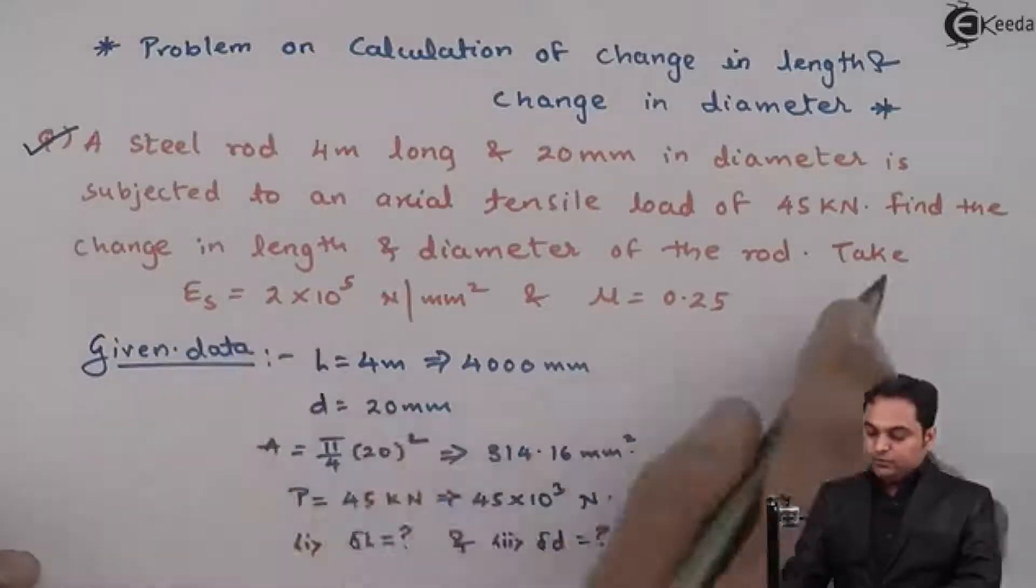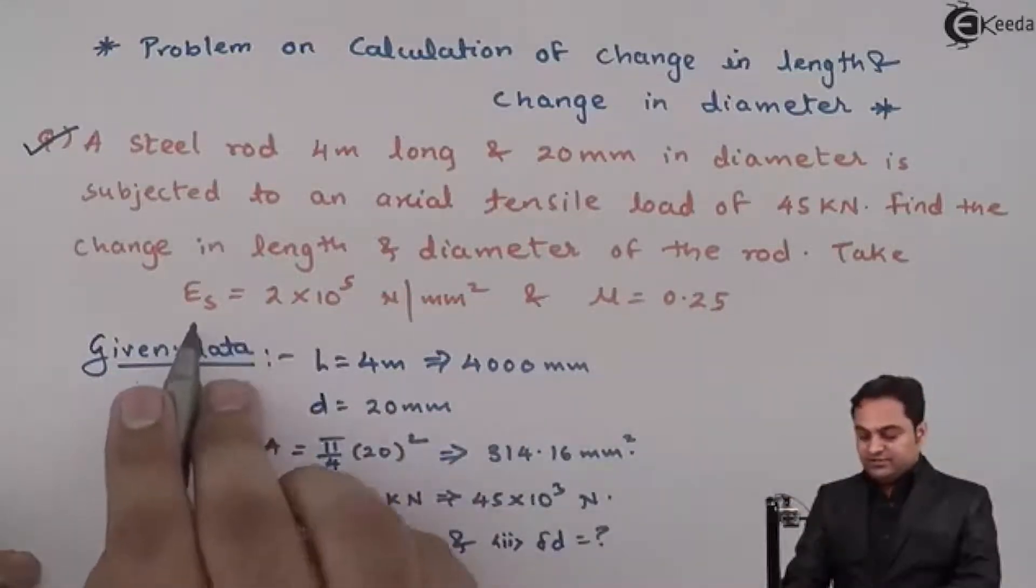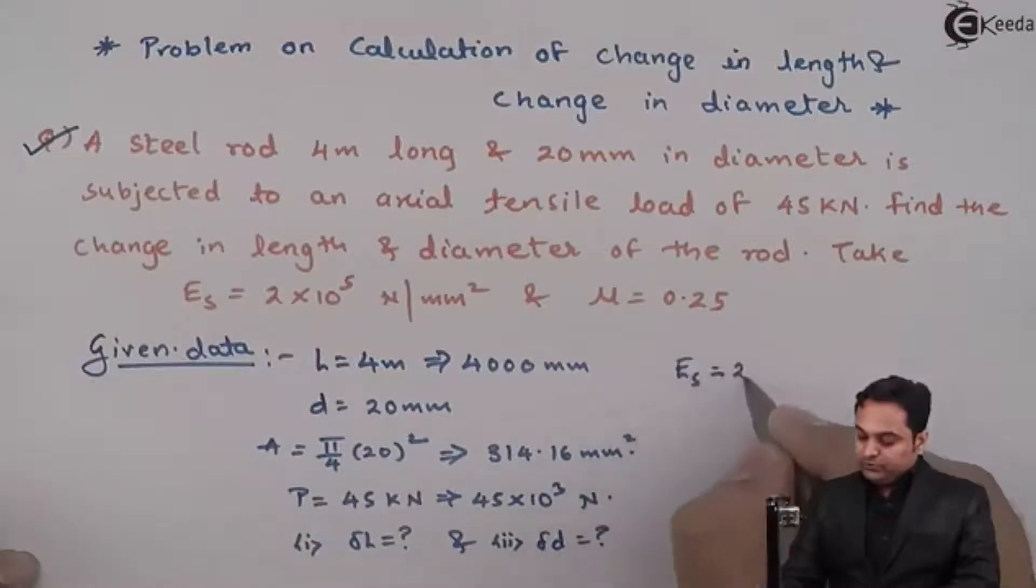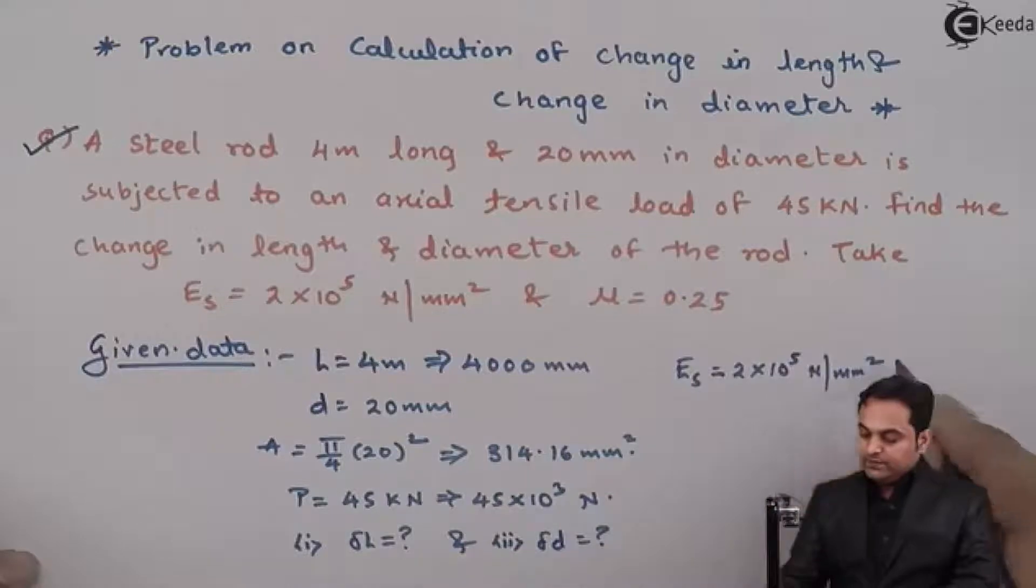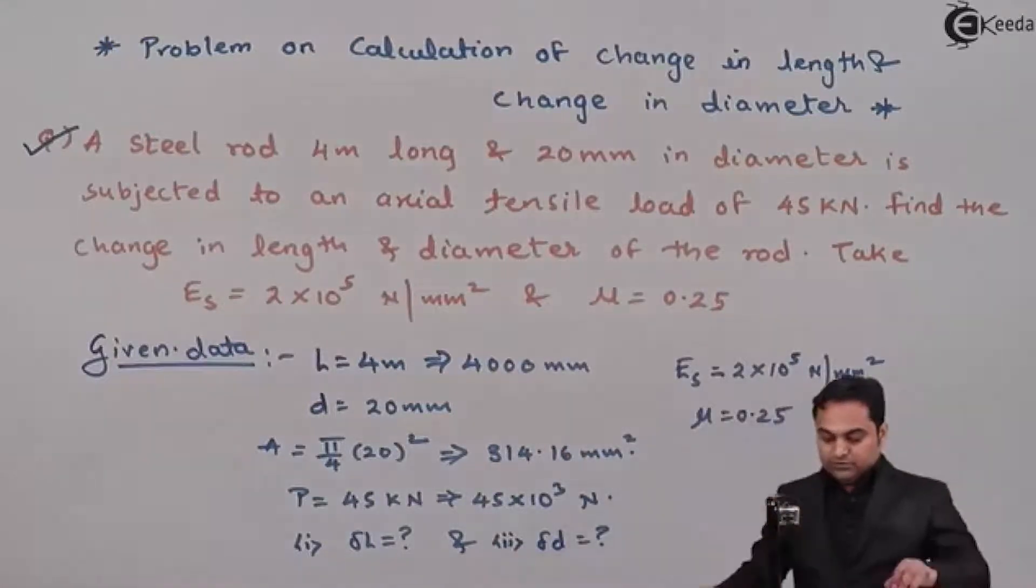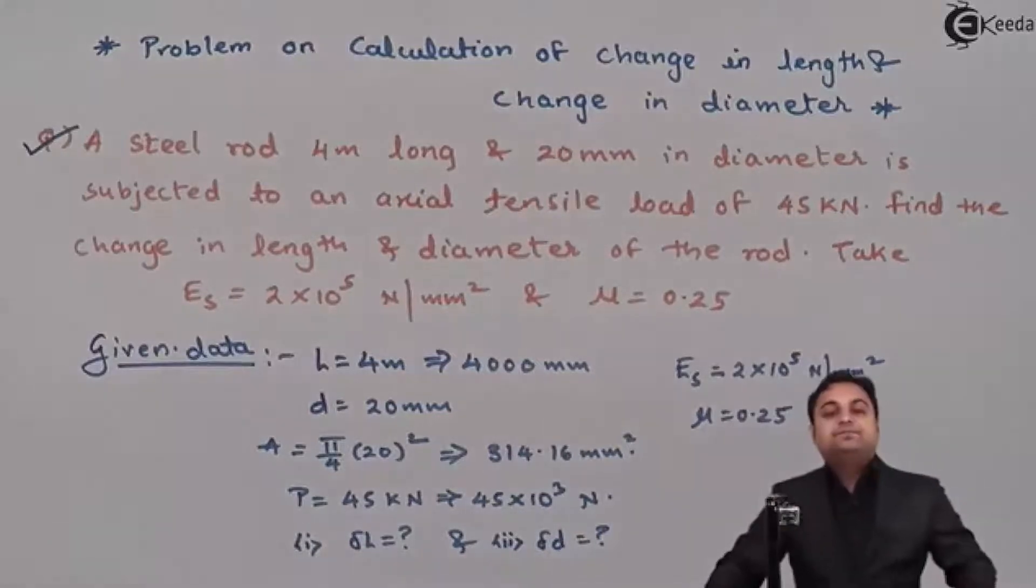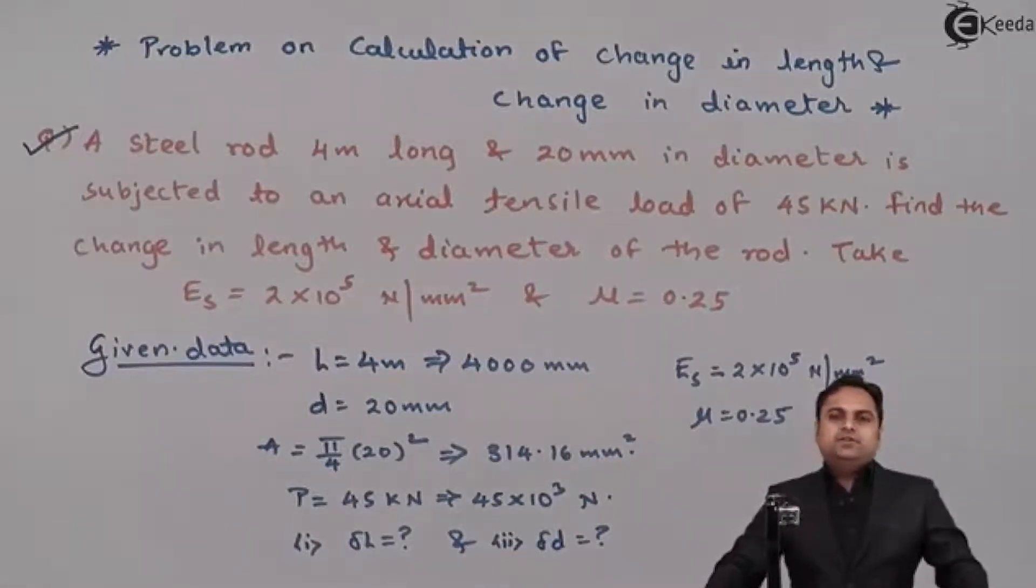Take value of E subscript S, that is Young's modulus for steel, 2 × 10⁵ N/mm², and μ is 0.25. So this is the question which we have. Now we will try to find the solution.